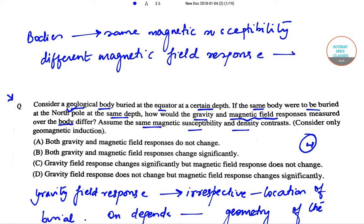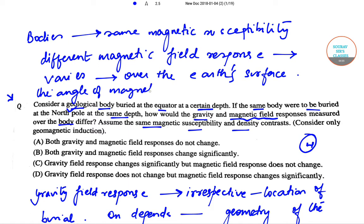As the geomagnetic field induction varies, so what we can say is that the angle of magnetization and hence the field response. So after complete analysis of the question, we can say that among the four options D will be the correct answer to this particular question.